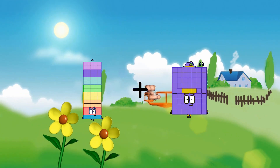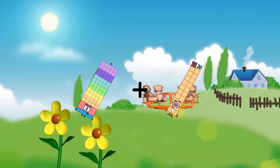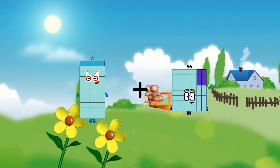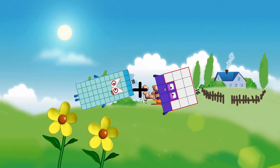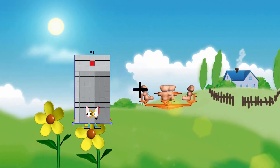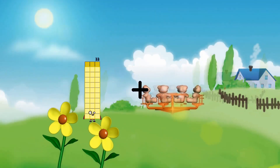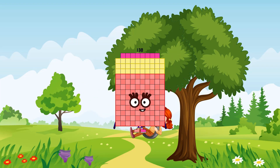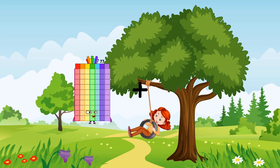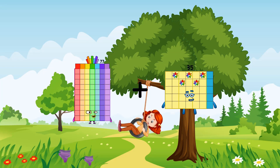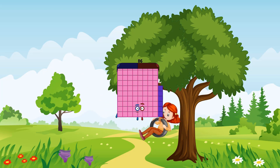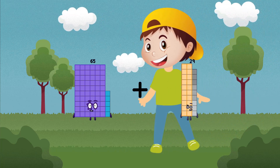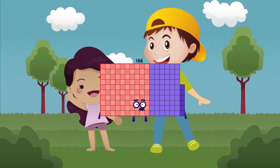75 plus 20 equals 95. 55 plus 16 equals 71. 33 plus 105 equals 138. 77 plus 9 equals 86. 65 plus 101 equals 166.